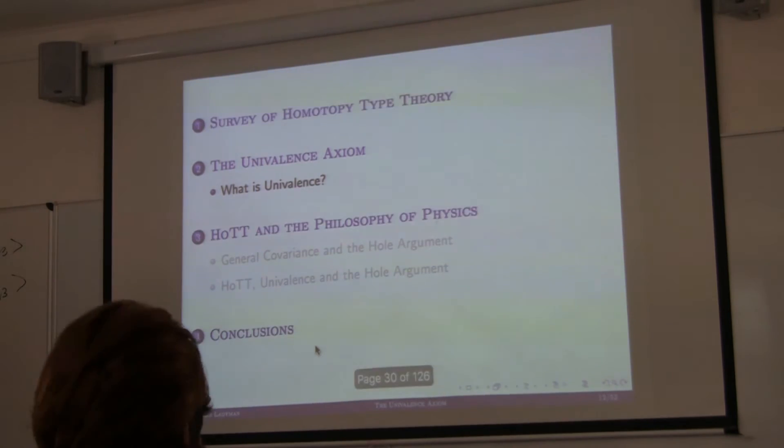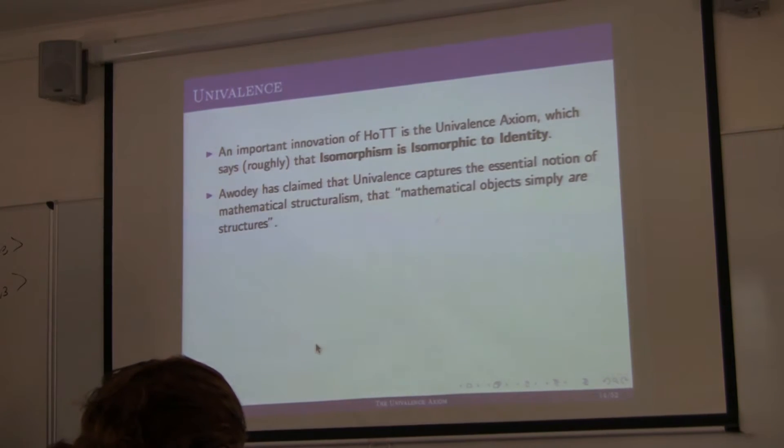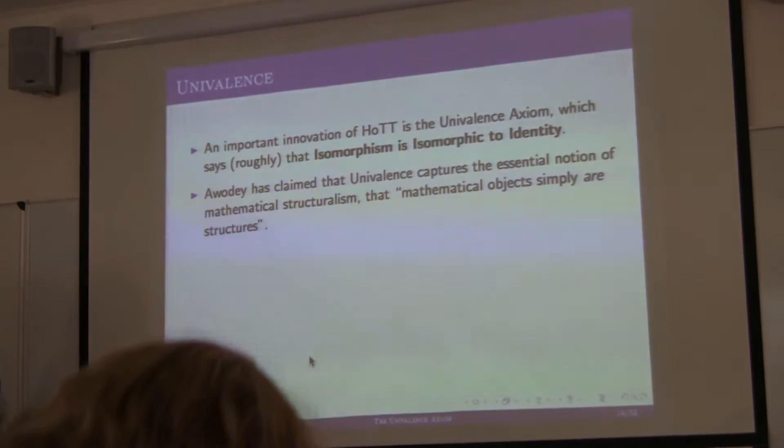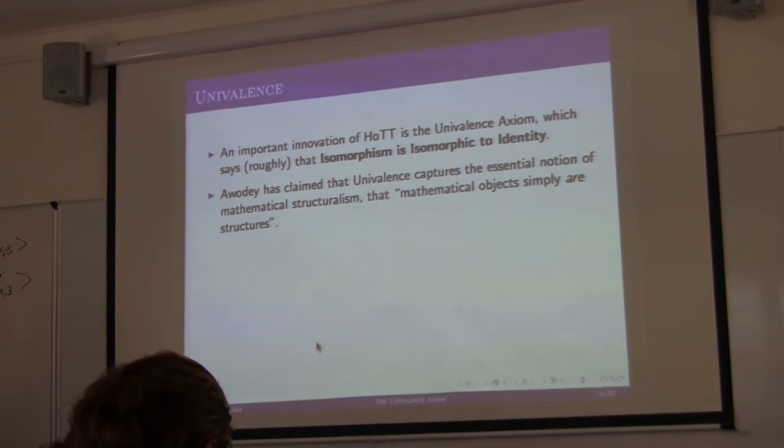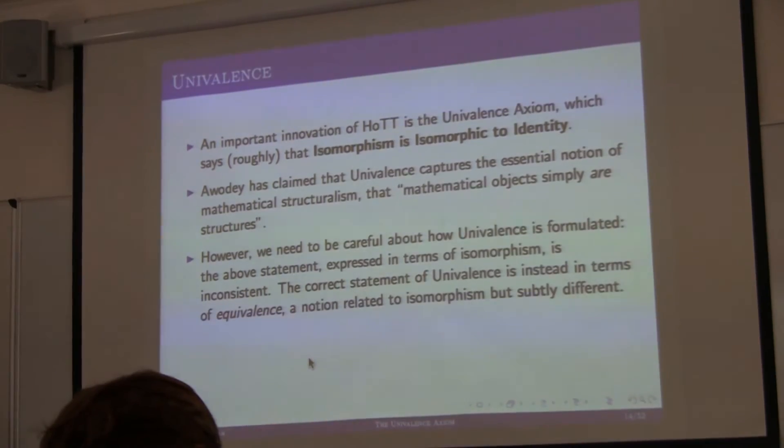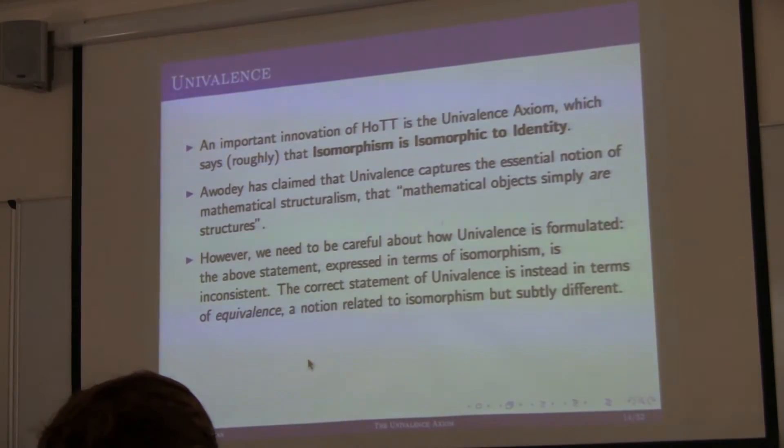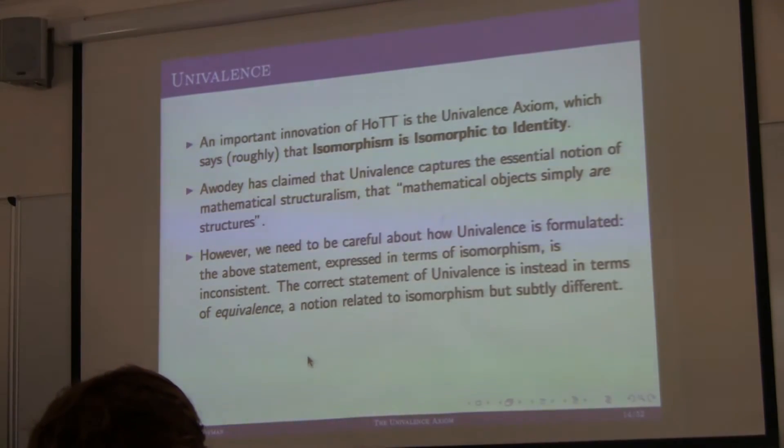So, there's a lot of confusion really about what should count as HoTT. And in the HoTT book, there's little clarity about when something depends on univalence and when it doesn't. And that's fundamental to the point that I want to make today. My point will be, one of my points will be that insofar as HoTT solves or deals with the whole argument, it can do so quite independent of univalence. And so it's not really, univalence shouldn't be thought of as a thing that's doing the work. Okay, so I'll try to speed up so we can discuss. So, what univalence says is very interesting. Very roughly it says that isomorphism is isomorphic to identity. And that's taken by Steve Awodey to represent or instantiate mathematical structuralism.